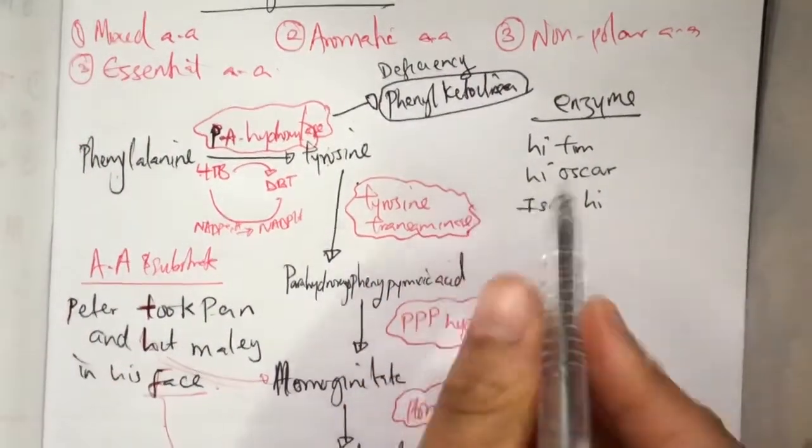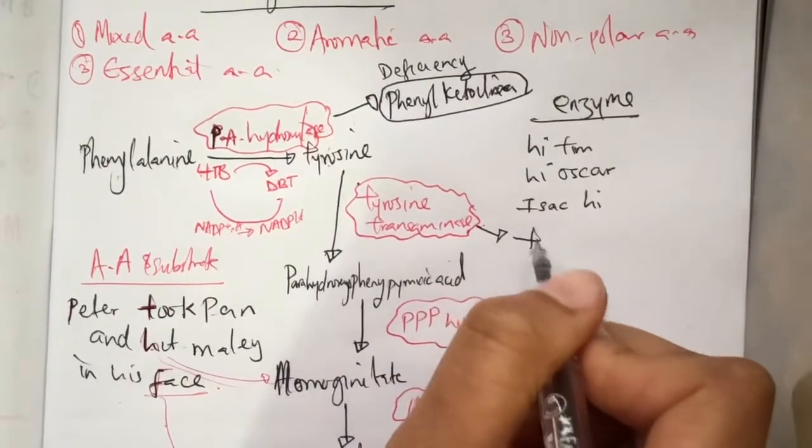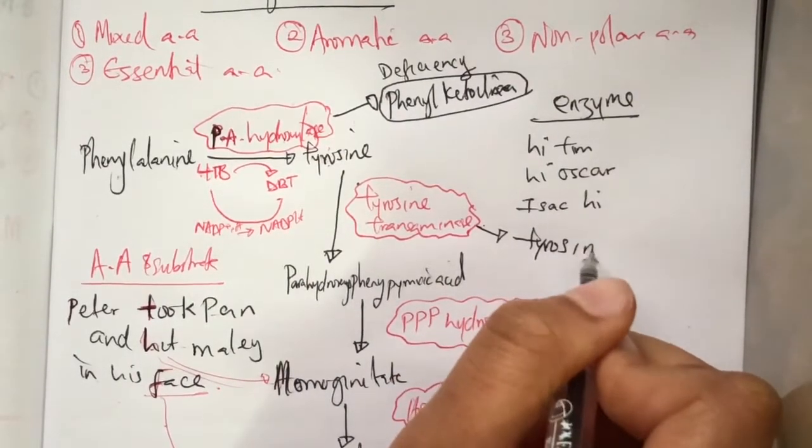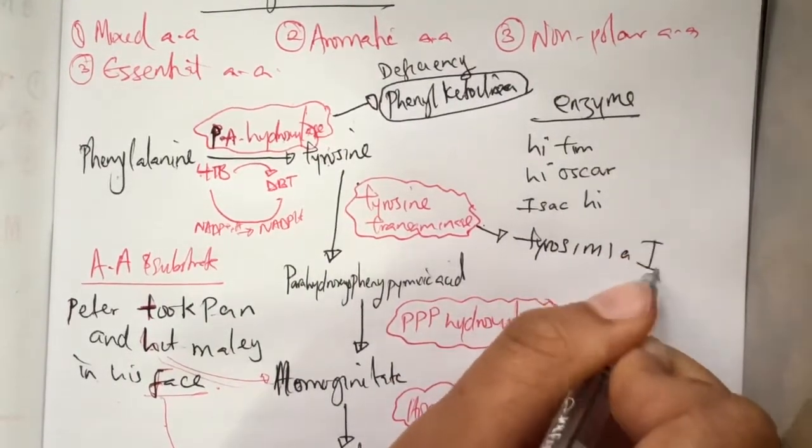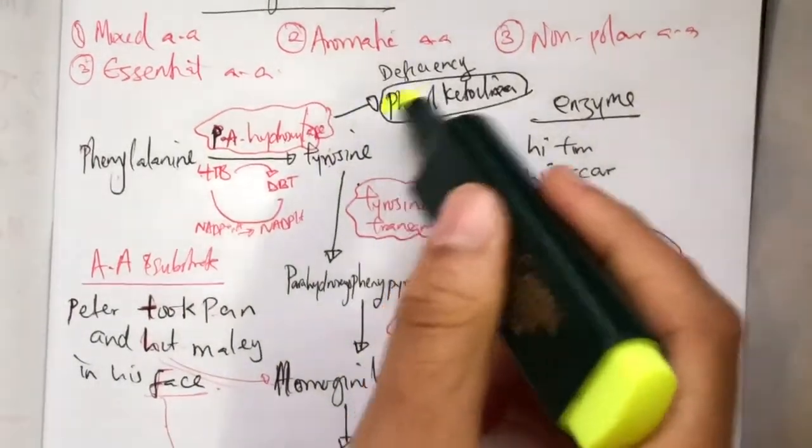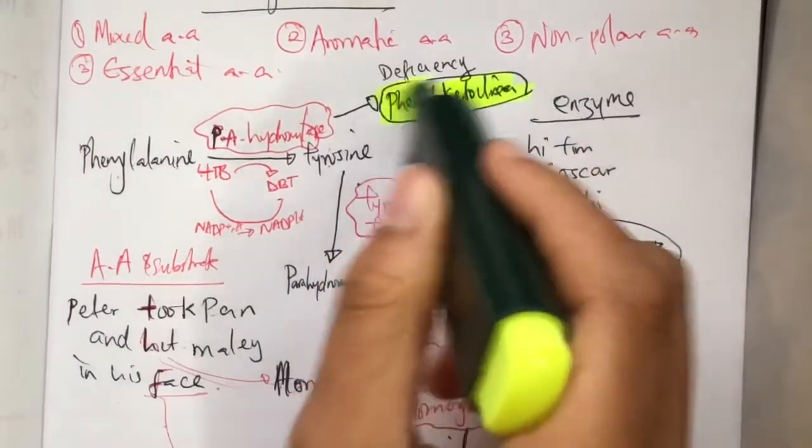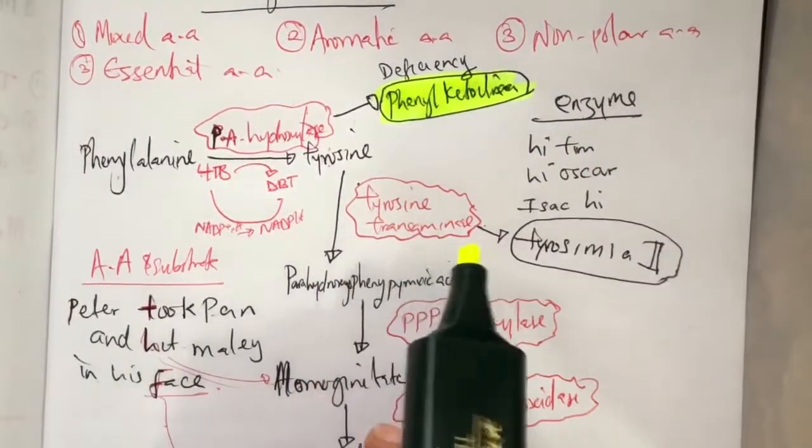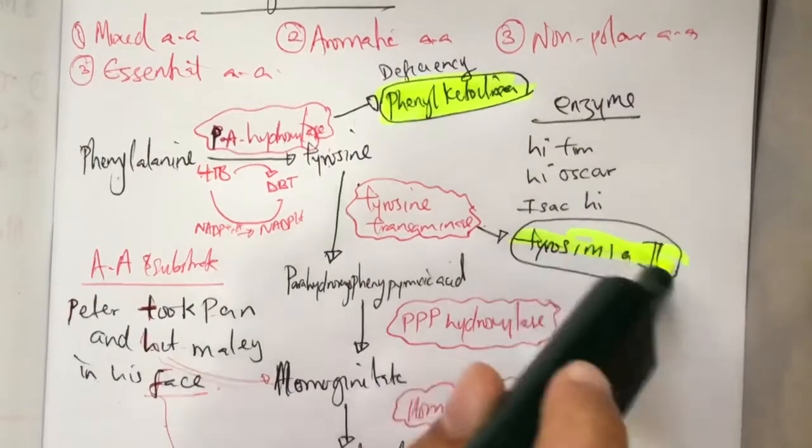Deficiency in transaminase leads to tyrosinemia type 2, which is tyrosine transaminase deficiency.